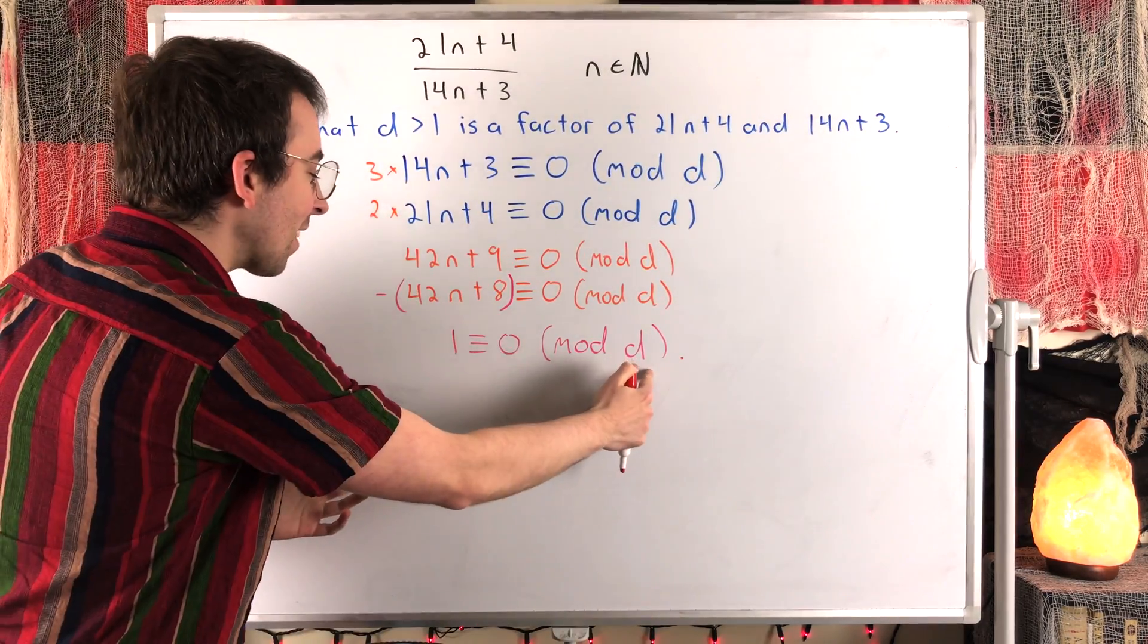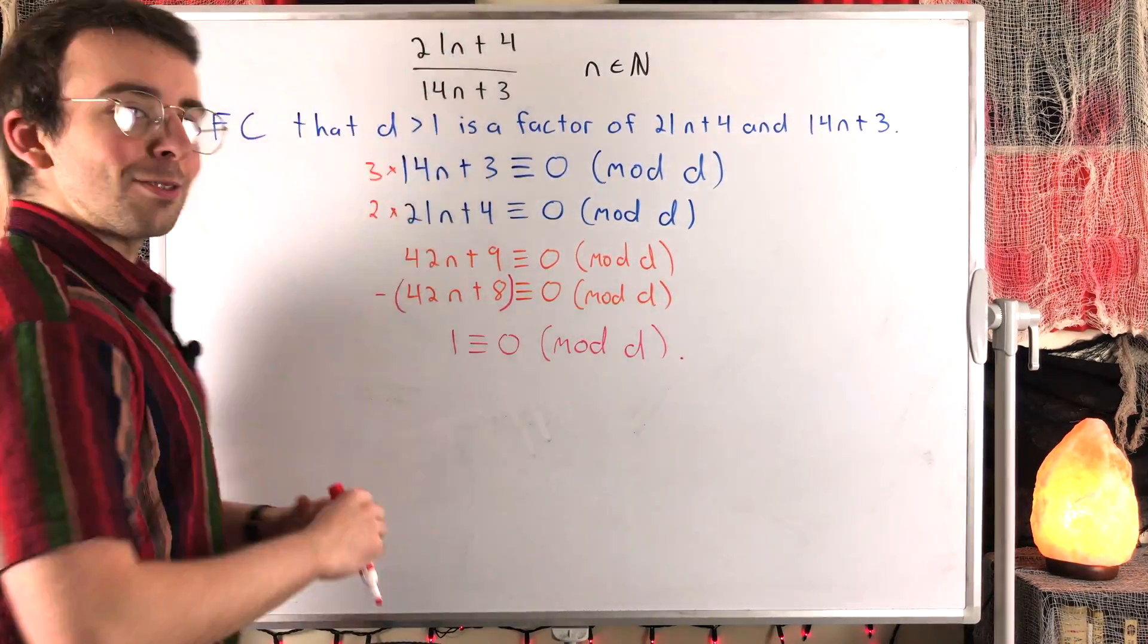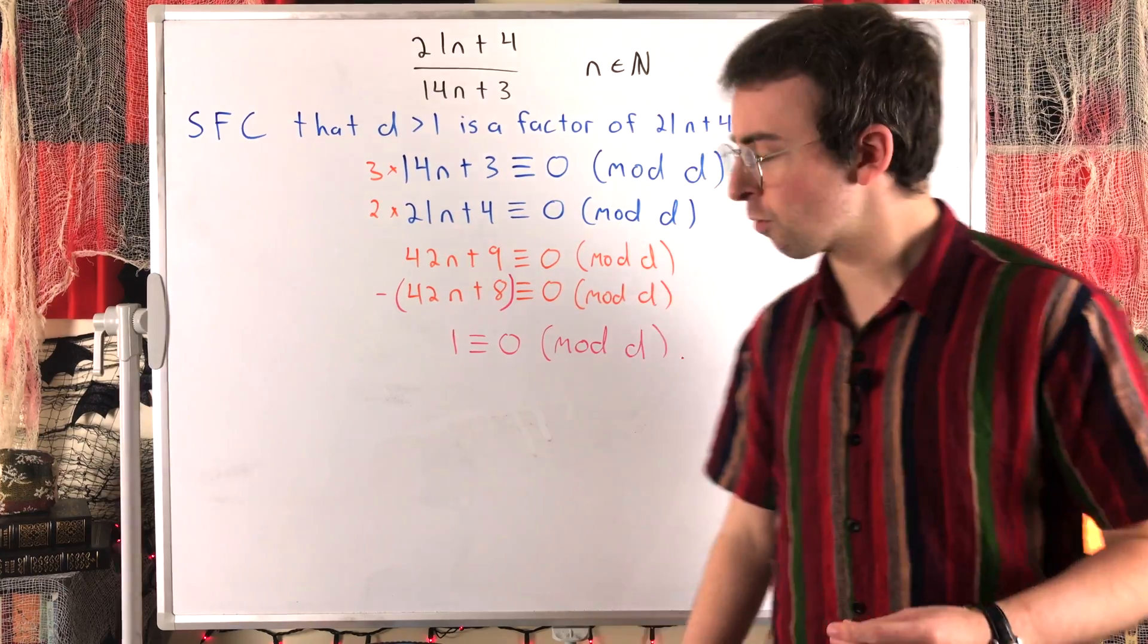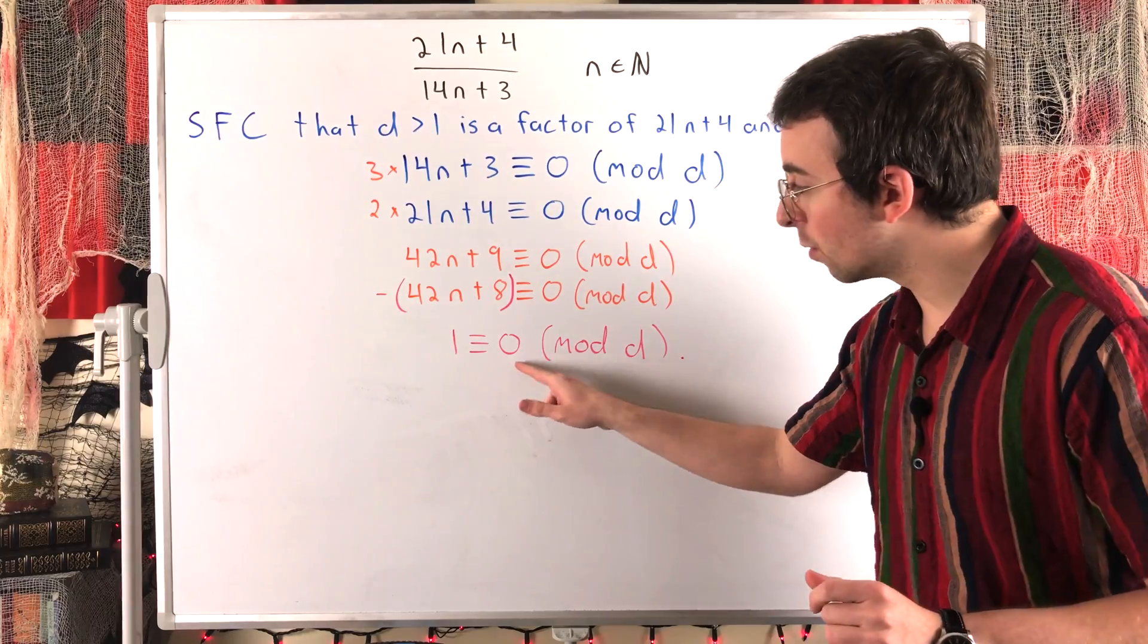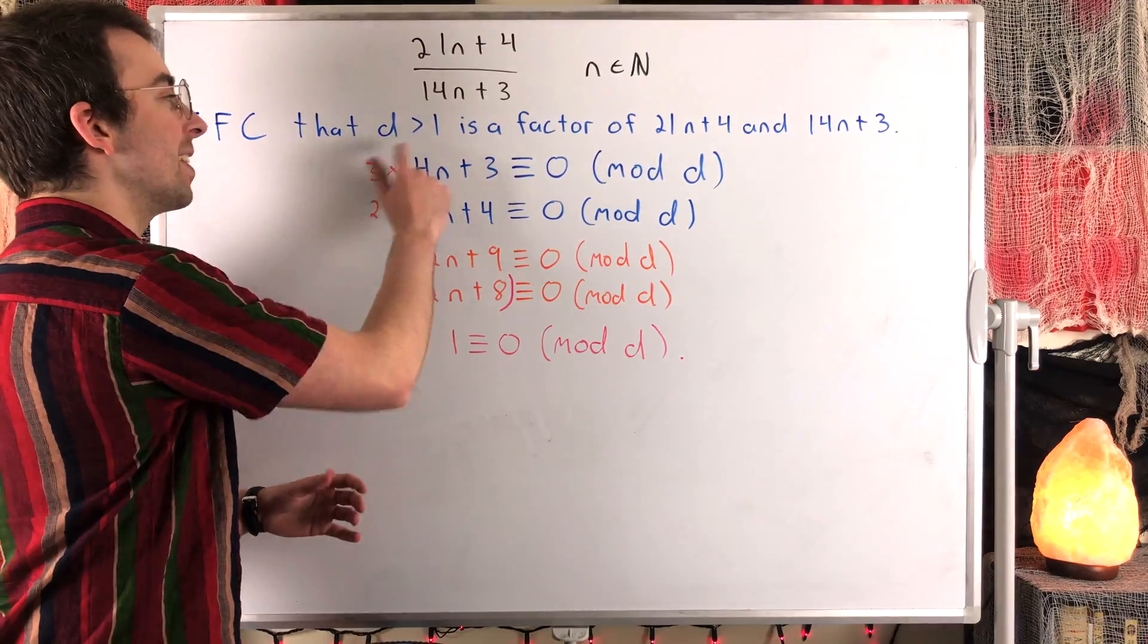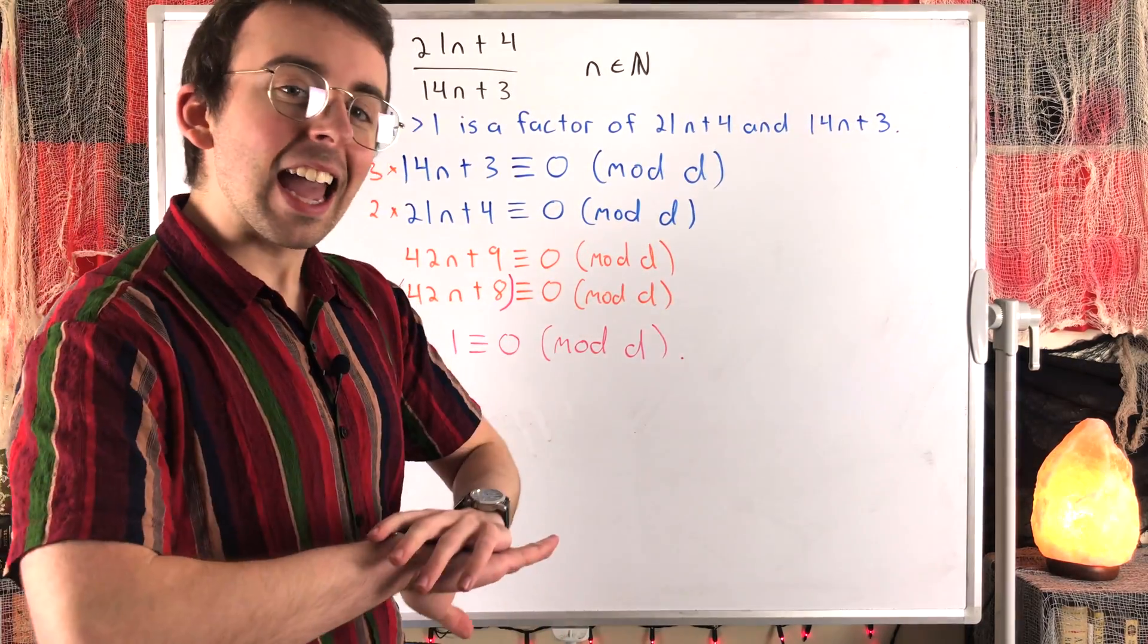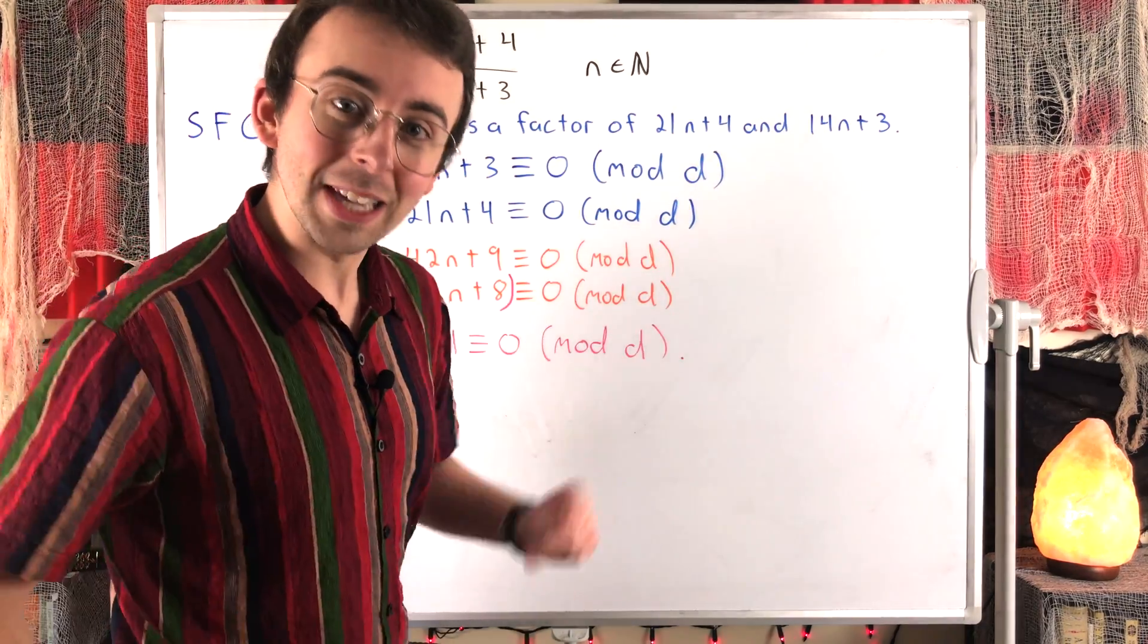That means that D is a factor of 1. But that can't possibly be true, because D is greater than 1. That is a contradiction. Once more, this is a contradiction because by definition of modular congruence, this statement means that 1 divided by D has a remainder of 0. So D divides 1. D is a factor of 1. That's impossible because D is greater than 1. Thus, it turns out that 21n plus 4 and 14n plus 3 can't possibly have any common factor greater than 1. We assumed that they did. We got a contradiction, so it can't be.